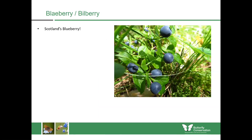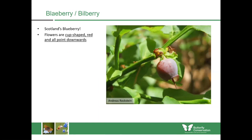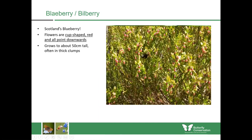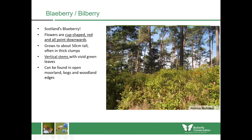Staying with the Ericaceae, we'll look at blaeberry, also sometimes known as bilberry — Scotland's blueberry, producing delicious blueberries later in summer. When in bloom, the flowers are cup-shaped, red and point downwards. They can grow in clumps up to 50 centimetres tall, covered in red flowers. They have vivid green leaves and can be found in habitats such as open moorland, bogs and woodland edges.